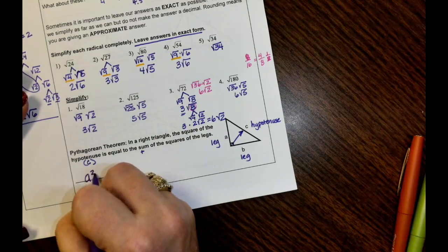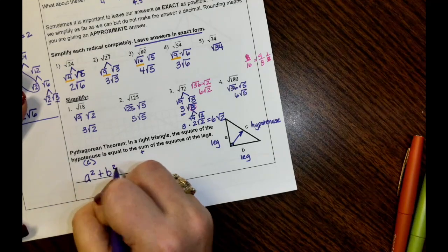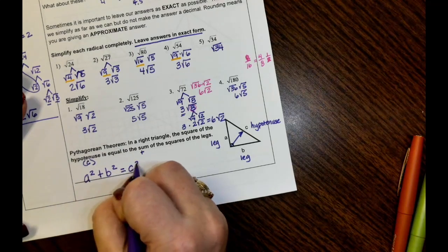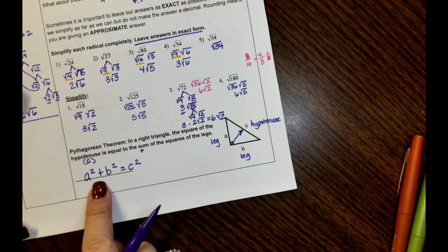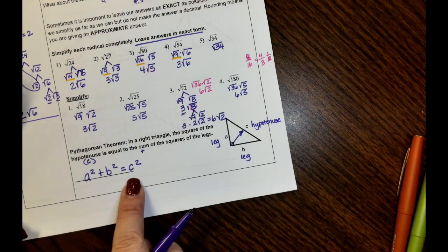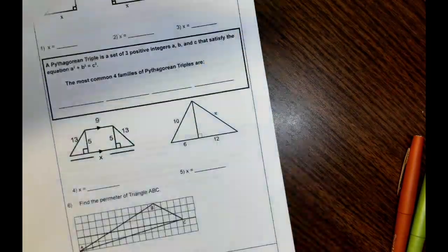Pythagorean theorem says A squared plus B squared is equal to C squared. The sum of the squares of the leg is equal to the square of the hypotenuse. That's what the Pythagorean theorem says.